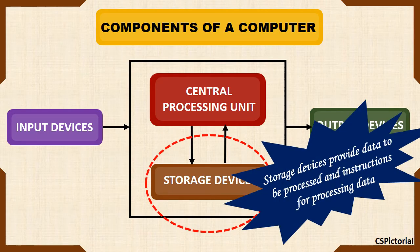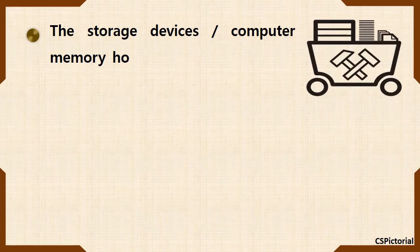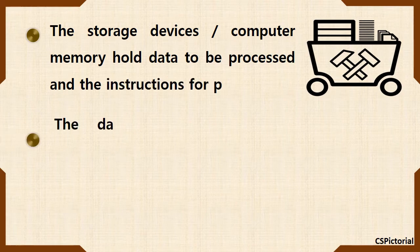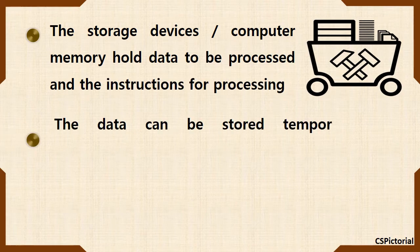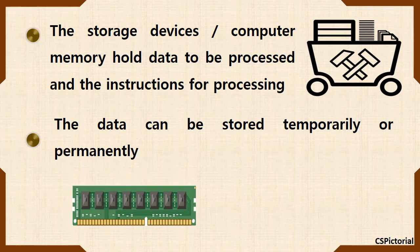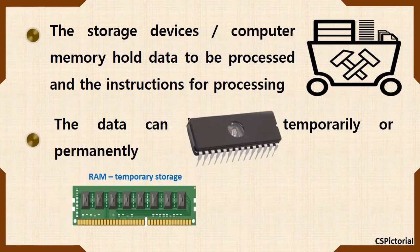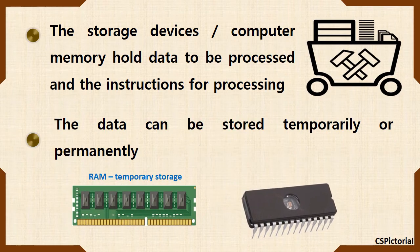The storage devices are required to provide data and instructions to the CPU. The storage devices refer to the computer memory — it holds the data and instructions. Like human memory, the computer memory could also be long-term permanent memory or short-term temporary memory.